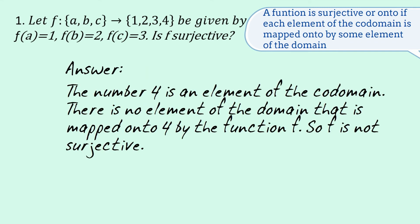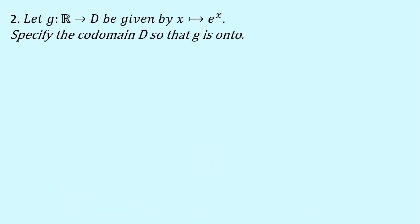Okay, now let's go on to this example or this problem. So here we have g. The function is called g. It maps all the real numbers onto this thing d, this set d, and it's given by the rule x becomes e to the x.